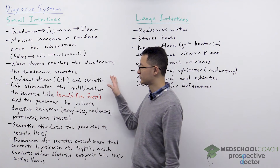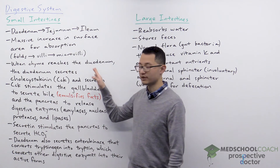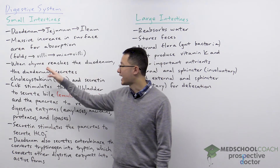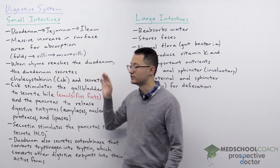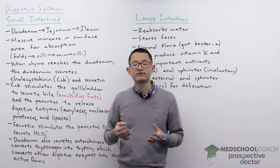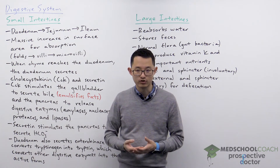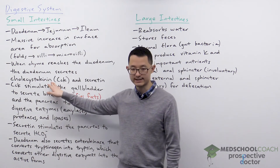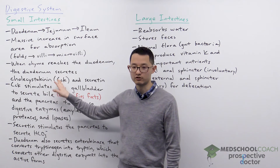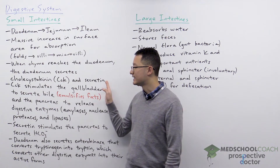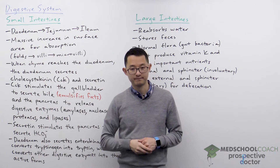As for digestion, when the pyloric sphincter relaxes, chyme is released into the duodenum. The presence of chyme in the duodenum causes the duodenum to secrete cholecystokinin, also called CCK, and secretin.